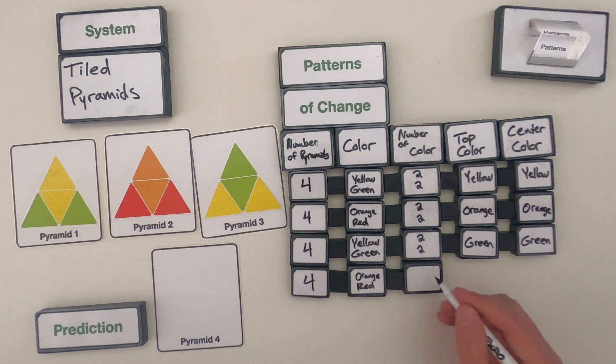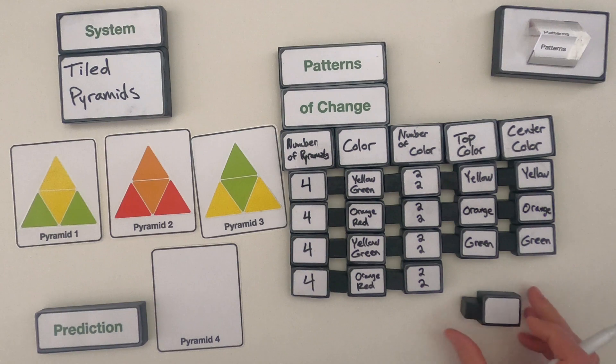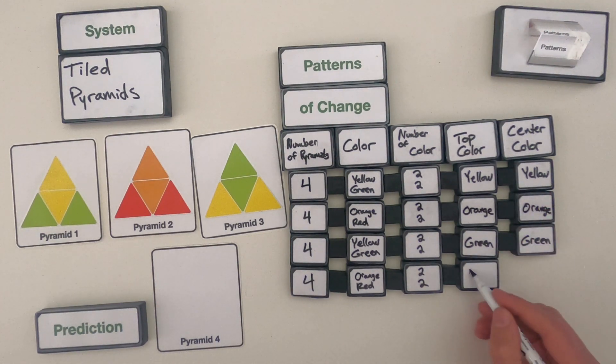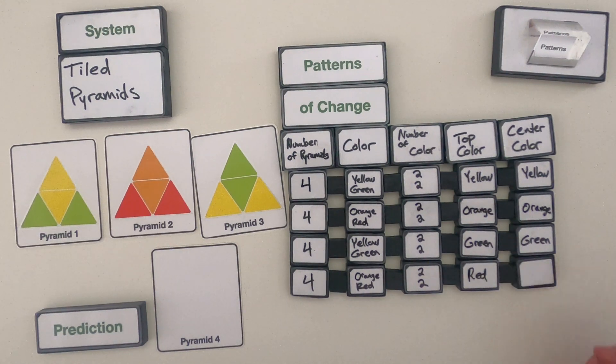If I think of how many colors, the number of each colors we're going to have, something like that. As far as what the top color is, the one thing I see not represented here would be red. And then the last thing, the center color that I don't see represented would be red as well.